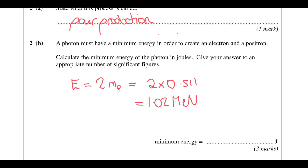It wants the answer in joules, so we need to multiply by 1.6 times 10 to the minus 13, because it's mega electron volts. So 2 times 0.511 times 1.6 times 10 to the minus 13 gives you 1.64 times 10 to the minus 13 joules. We give that to 3 significant figures, because from the formula sheet the mass is given to 3 significant figures.